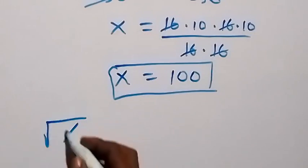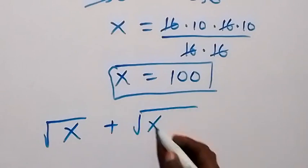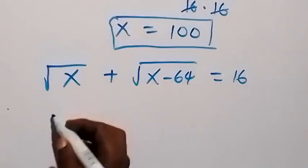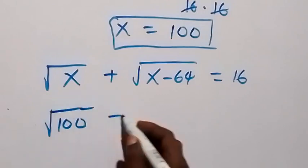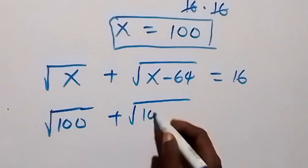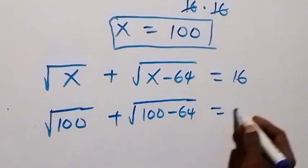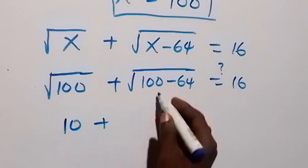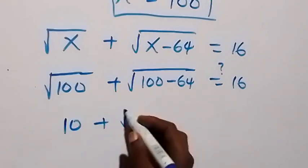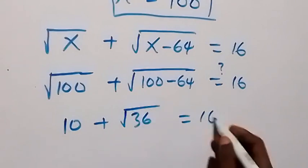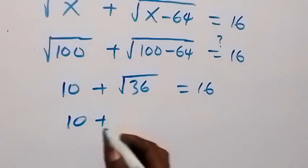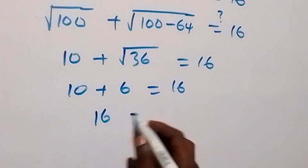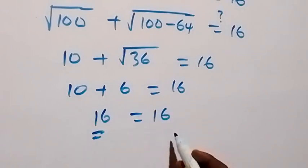We can verify: the original equation is √x + √(x − 64) = 16. Substituting x = 100 gives √100 + √(100 − 64) = 10 + √36 = 10 + 6 = 16. Left-hand side equals the right-hand side, confirming the solution.